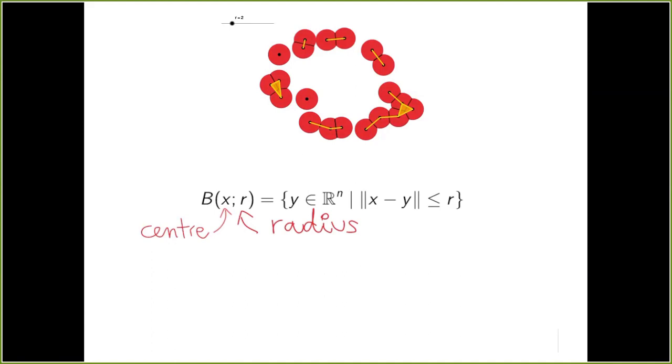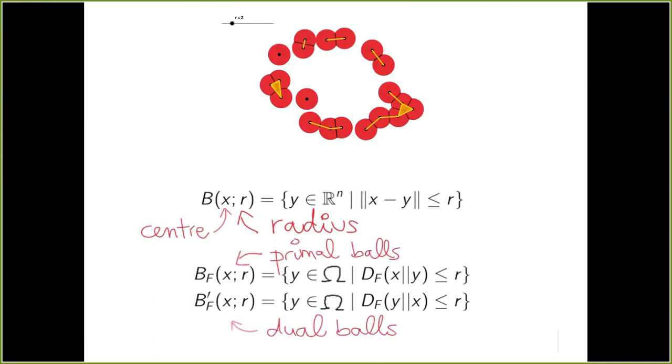However, since the Bregman divergence is not symmetric, we obtain two types of balls, which we call the primal and the dual balls.